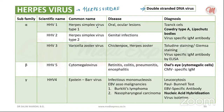Herpes simplex virus type 1 is usually associated with oral and ocular lesions. Specific disease conditions include acute gingivostomatitis, herpes labialis, keratoconjunctivitis, eczema herpeticum, encephalitis, and dendritic keratitis.